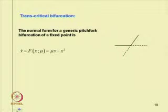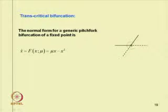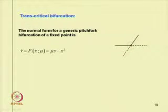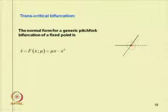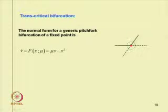Similarly, we have previously studied the transcritical bifurcation point, where before the bifurcation there is a stable and an unstable branch, and after the bifurcation the stable branch becomes unstable and the unstable branch becomes stable — they interchange stability. Though the number of branches remains the same, the change in stability defines the transcritical bifurcation point.